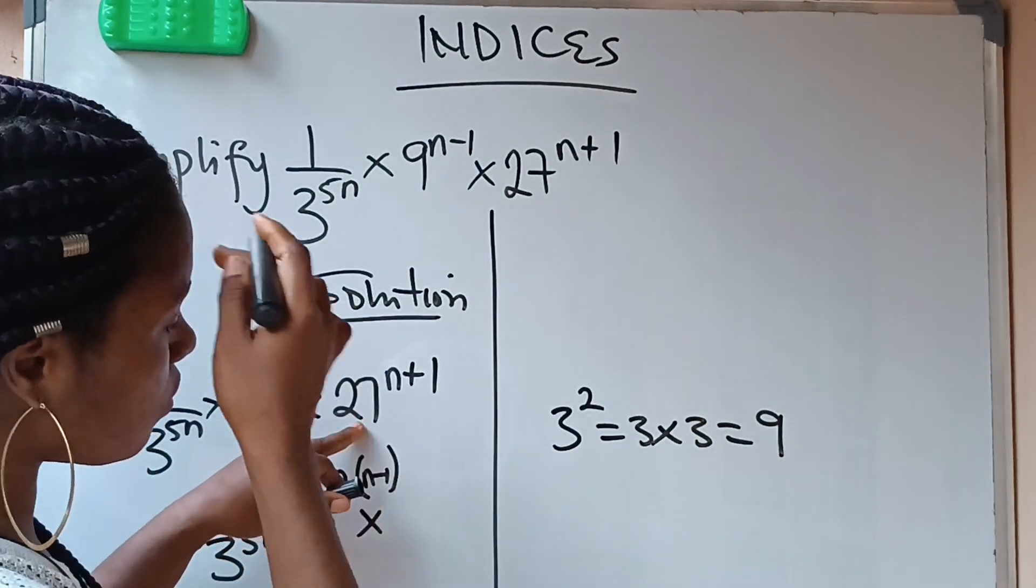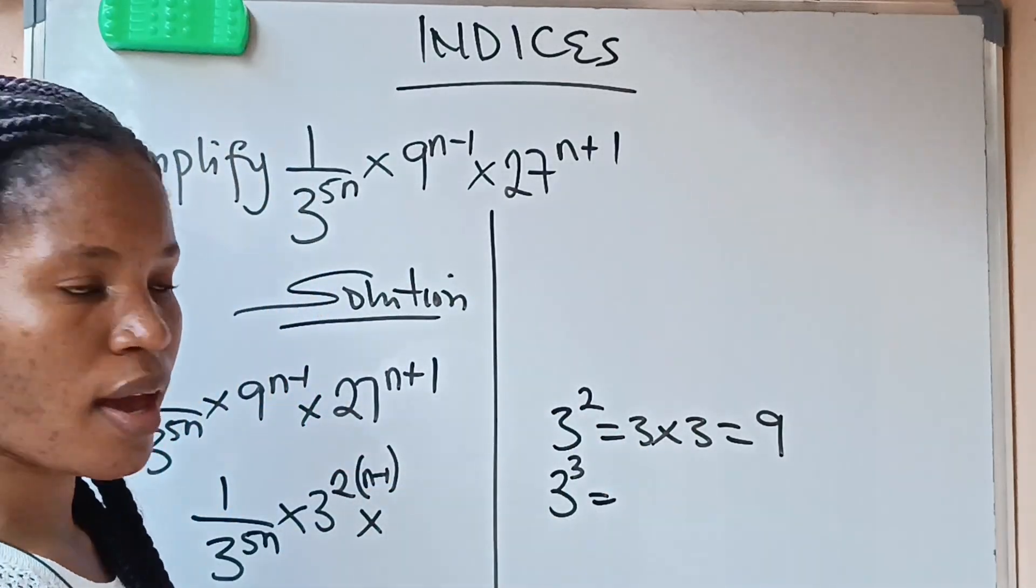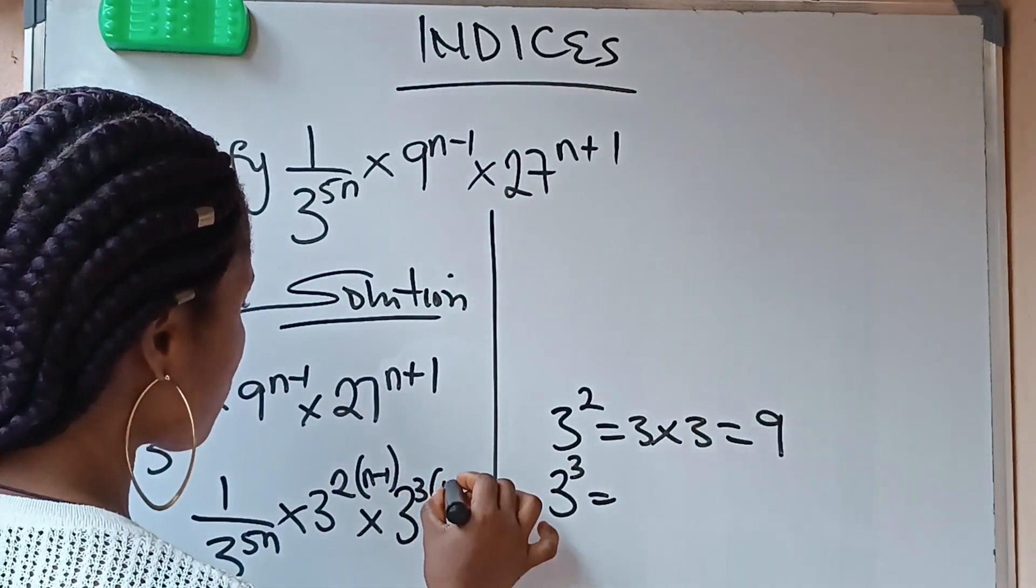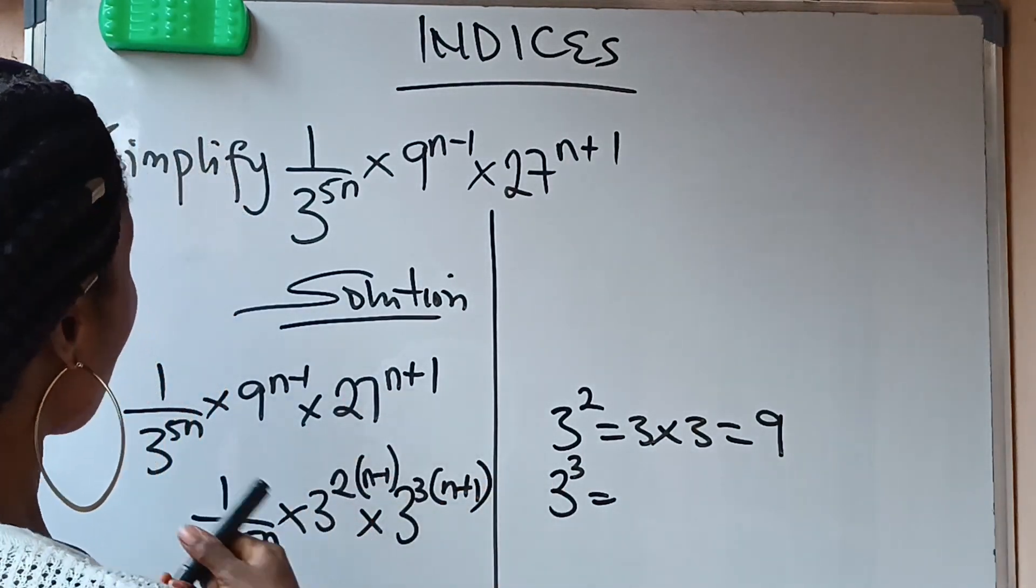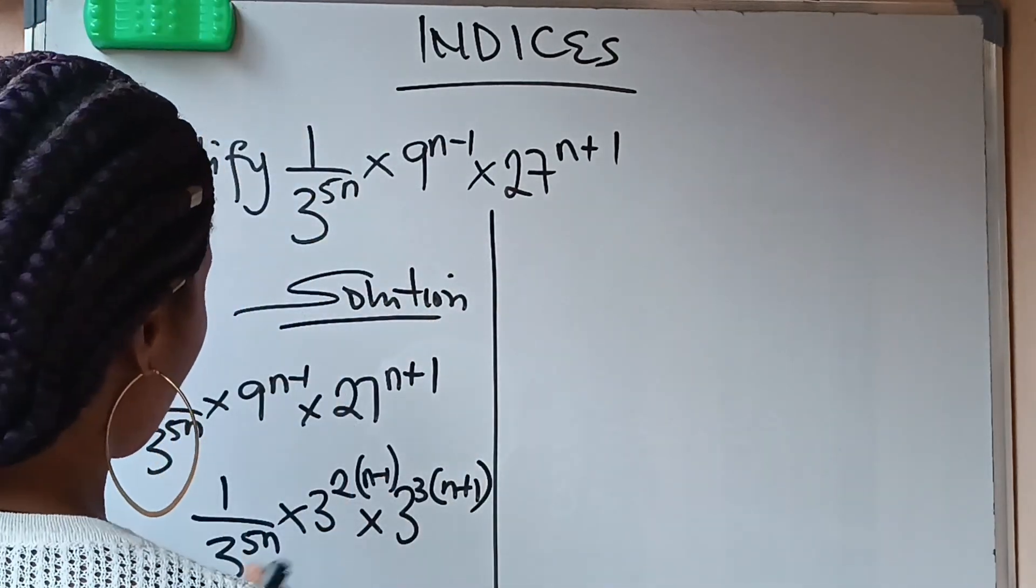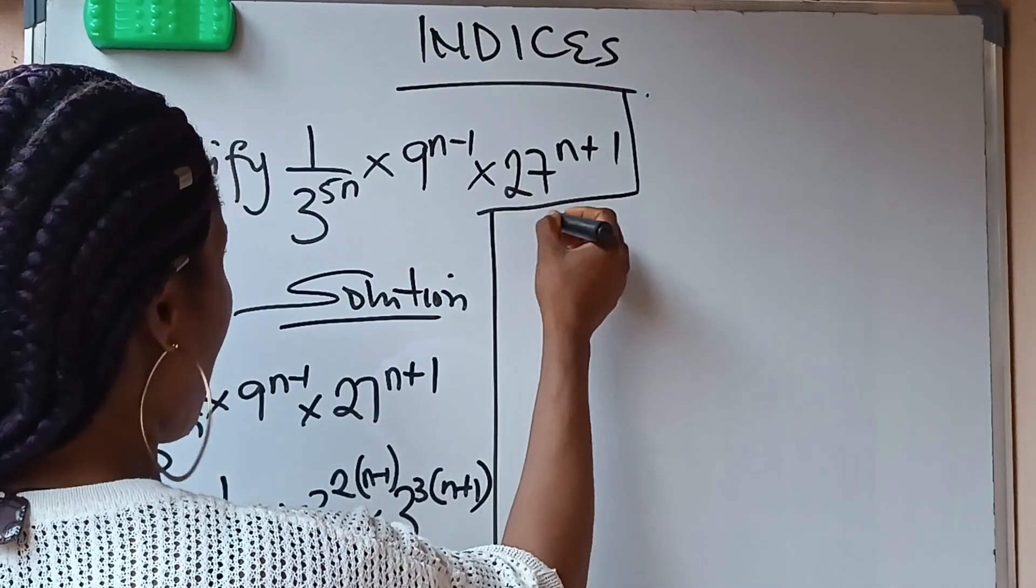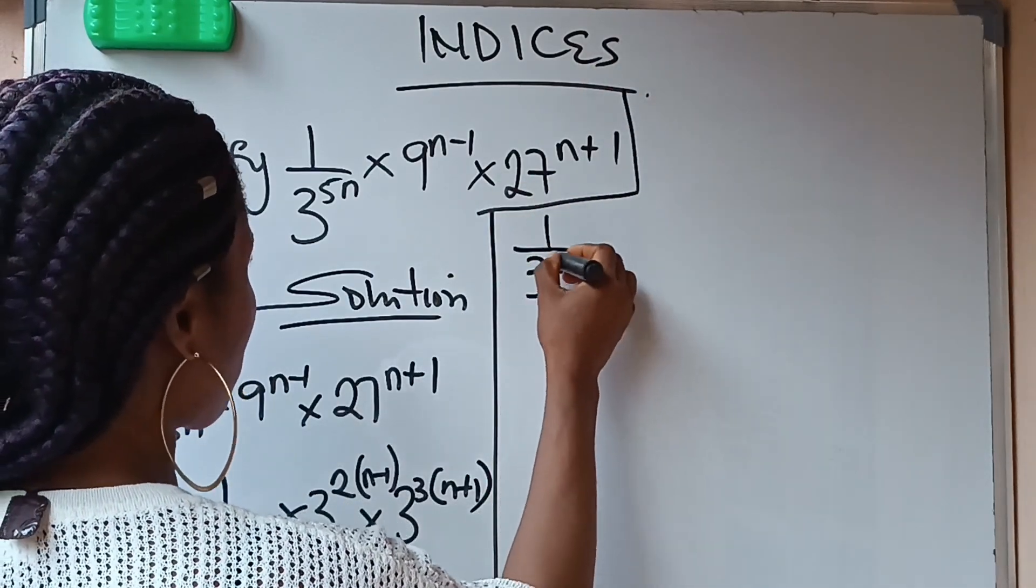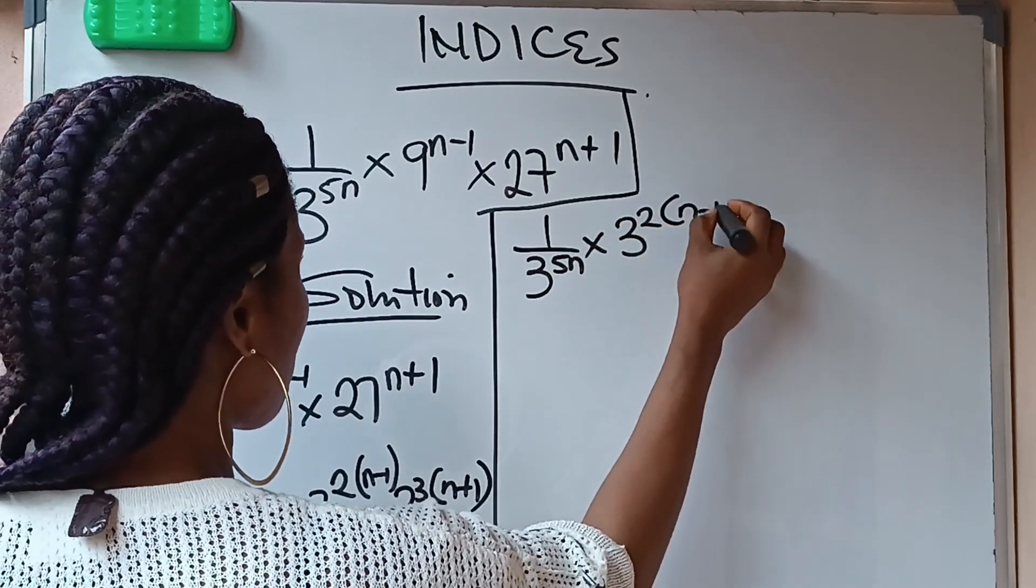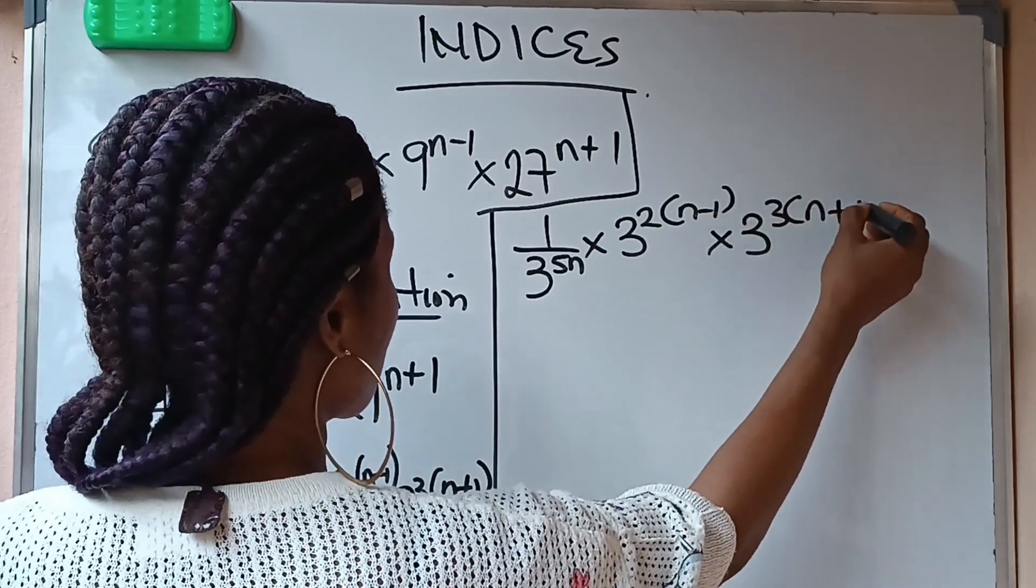Times, this 27 now is same thing as 3 raised to the power of 3. So I'm going to replace this 27 with 3 raised to the power of 3 into n plus 1. Now let us continue. So this is what I actually have here. Let me rewrite it here. I have 1 over 3 raised power of 5n times 3 raised power of 2 brackets n minus 1 times 3 raised power of 3 brackets n plus 1.